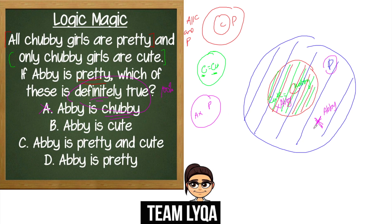Option B — Abby is cute: if Abby is in the inner circle, yes she's cute, but since we only know she's pretty, she could be in the outer part of the pretty circle and not cute. So this is not definitely true. Option C — Abby is pretty and cute: while 'pretty' is 100% correct, 'cute' is uncertain, so this is also not definitely true. The correct answer is D — Abby is pretty. Whether she's here or there in the diagram, she's always inside the pretty circle, so pretty is the only thing we can say with 100% certainty.